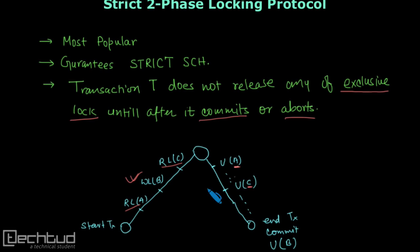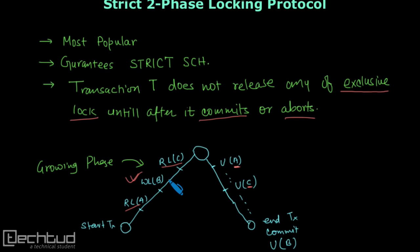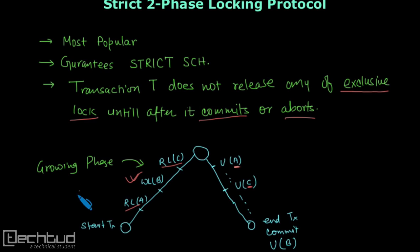However, since we still have a growing phase — similar to basic two-phase locking protocol — we can acquire locks and perform operations in between, unlike the conservative protocol where all locks are acquired first. Because operations may execute in between during the growing phase, we can still have deadlock, like in basic 2PL.